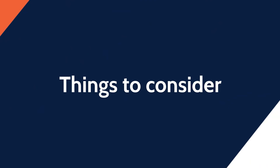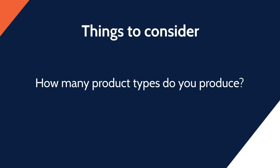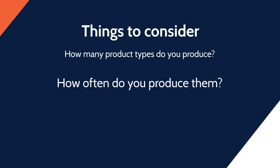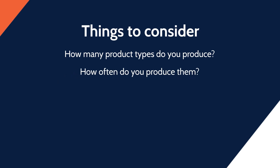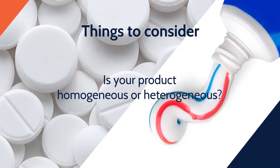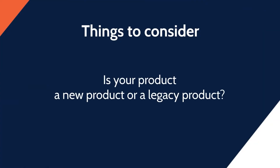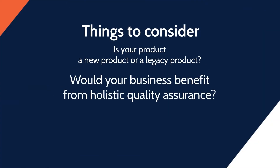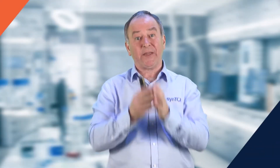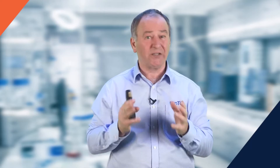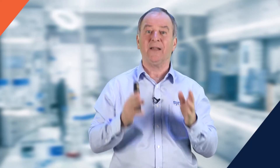Things you have to consider are how many product types you produce and how often you produce each of these products. You also have to look at the product itself — is it homogeneous, is it heterogeneous? Is this a new product or is it a legacy product? Would holistic quality assurance be of benefit to your company? One misconception is that once one model is developed then that will be applicable to all products — the chances are it won't. The chances are you'll have to develop a model or models for each product you produce.